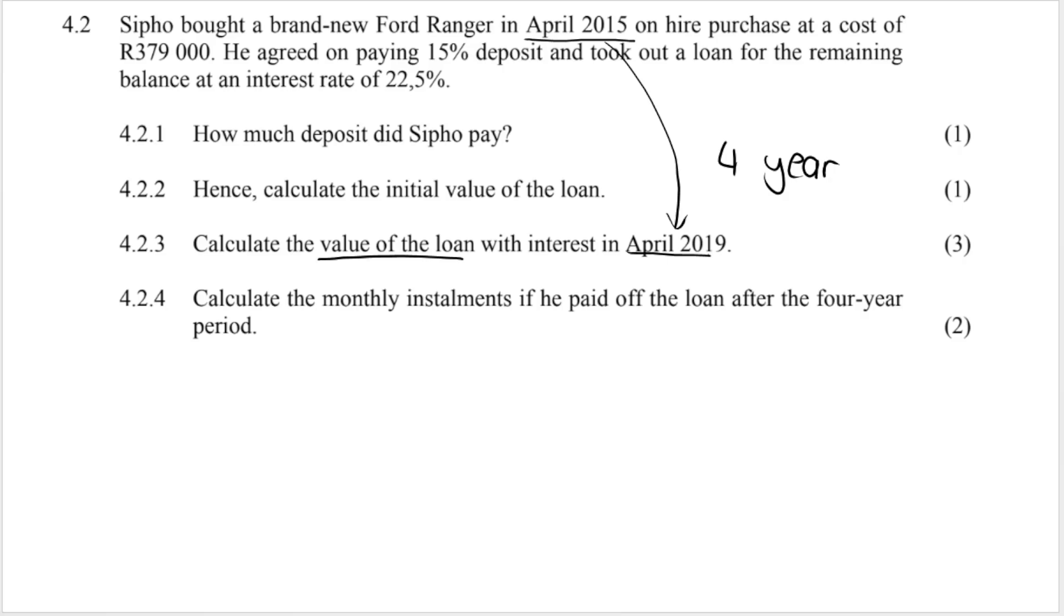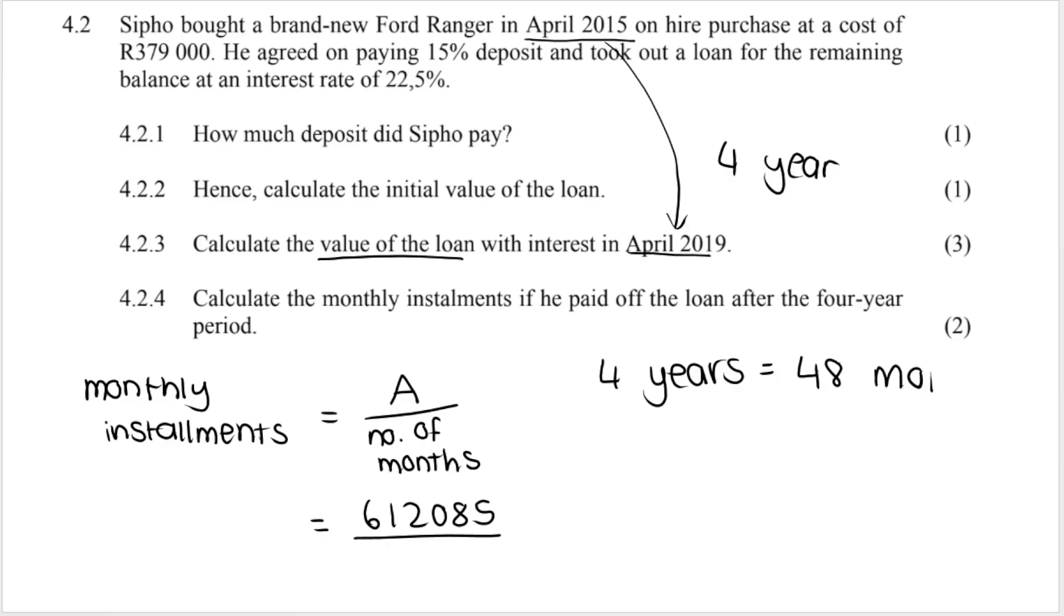My next question wants the monthly installment. So how much money I'm going to pay off every month if he paid the loan after the four year period. So to calculate the monthly installments remember you take your A value your final value including interest divided by the number of months. So in our case we've got our A value our answer from the previous question and it's four years which equals 48 months. Remember there's 12 months in one year. So you times it by 12. So it is divided by 48 and therefore our monthly installments 12751.77.